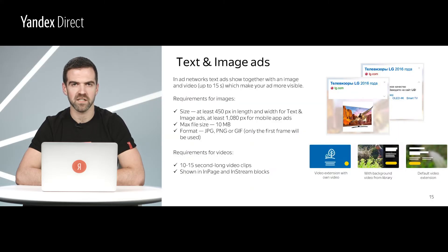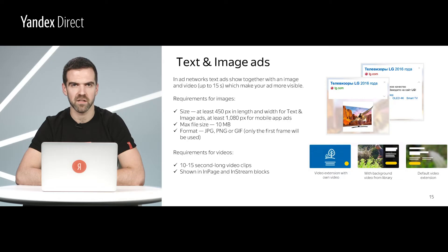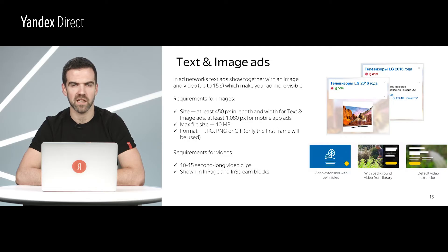Let's start with text and image ads, which feature your ad text along with an image and even video extensions. Images can appear in two formats: standard and wide format. It's best to add images in both formats to maximize the number of sites where your ad can appear. Take note that the image should show the product or service being advertised. Avoid images with built-in text or logos, since the image will likely be cropped to fit into the host site's ad slot.